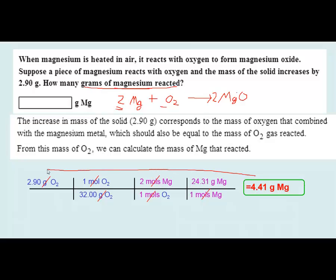This was a simple stoichiometry problem worked backwards from the mass gained. At this point, you should go to your homework and continue practicing these questions. I hope the examples today will help you with some of the more challenging questions. Have a great day, everybody.